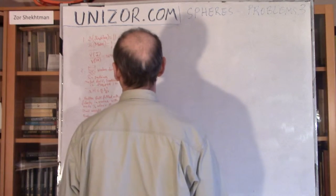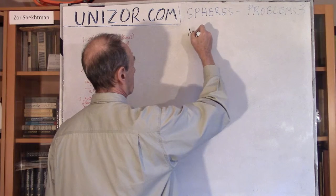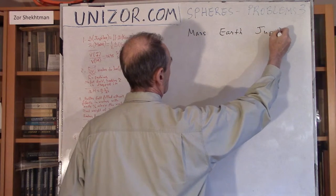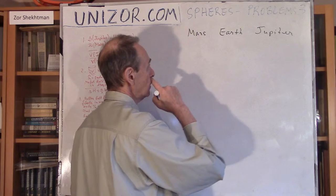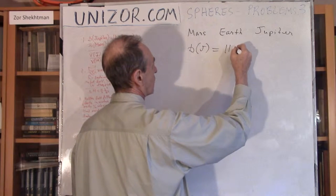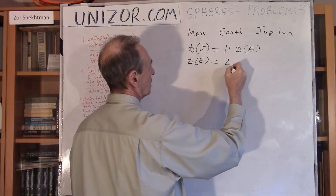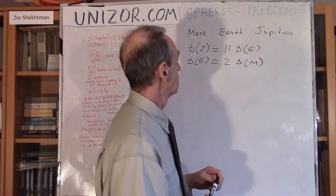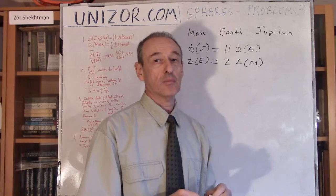The first is extremely easy. There are three planets which I would like to consider: Mars, Earth, and Jupiter. They are in the order of size. I know that the diameter of Jupiter is eleven times greater than the diameter of Earth, and the diameter of Earth is twice as big as the diameter of Mars. The question is how much bigger the surface and the volume of Jupiter are than that of Mars, considering that these planets are ideal spheres.